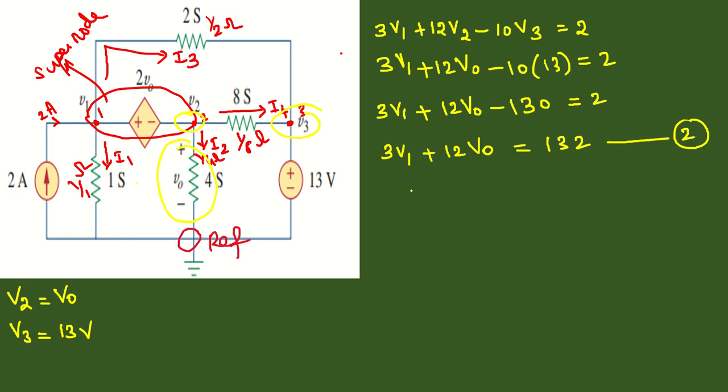Now bringing back that first equation: V1 minus V2 equals 2V0. Since V2 is V0, we can write V1 equals 3V0. Let's take this as the first equation in modified form.